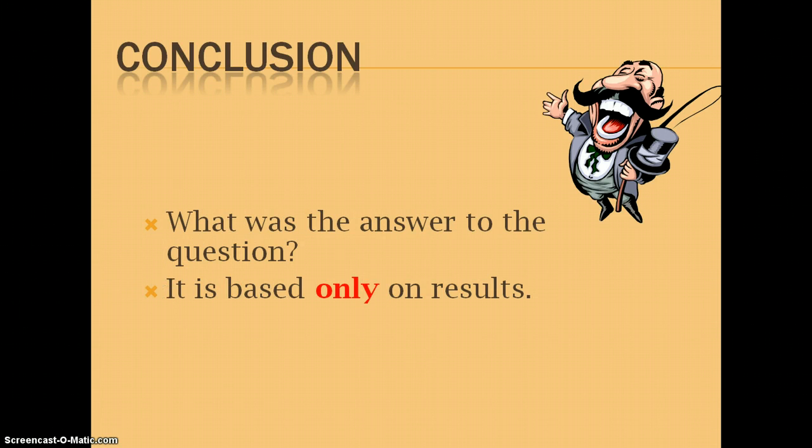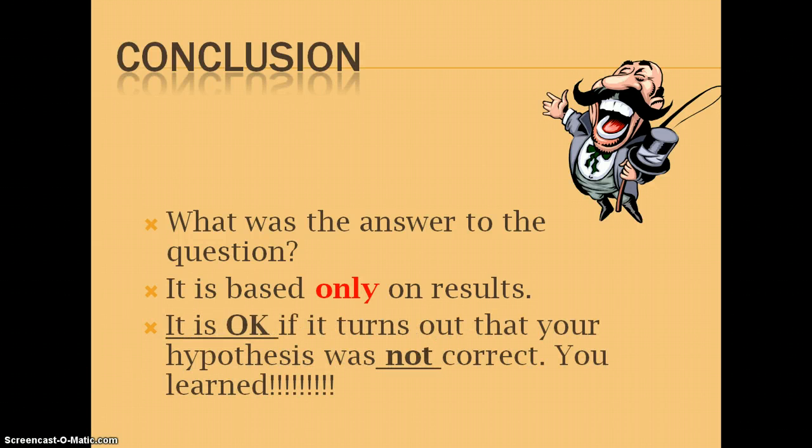Now your conclusion. What was the answer to your question? The conclusion goes back to your original question, and your conclusion is based only on your results, not by what you think is going to happen. We're done with what we think. It's only based on the qualitative and quantitative results. And here's the big one: it is okay if it turns out that your hypothesis was not correct. You learned something as a result. So much of science is done by a scientist not being correct with their original hypothesis. It only just starts the process there, it doesn't finish it. So it is perfectly okay if your hypothesis is not correct.